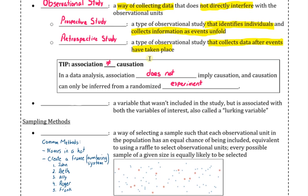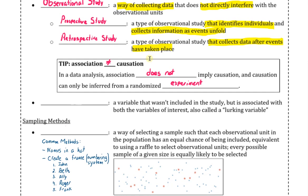One of the reasons for this is because of confounding variables. A confounding variable is a variable that wasn't included in the study but is associated with both variables of interest. This is also sometimes called a lurking variable.